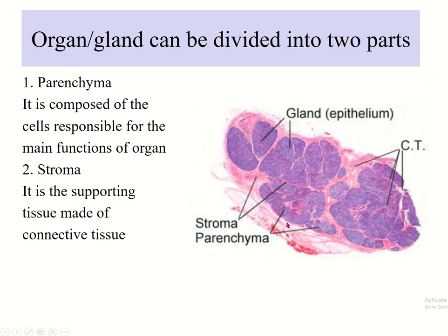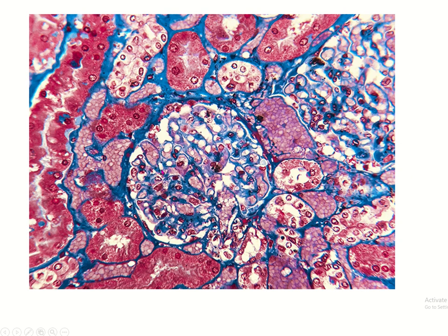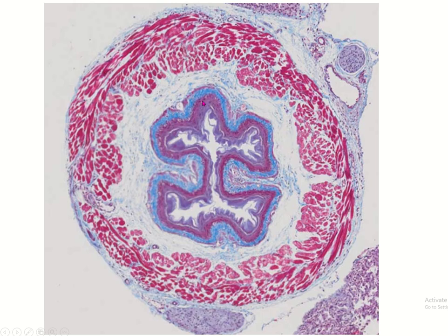Any organ of the body can be divided into two parts: parenchyma and stroma. Stroma is the supporting connective tissue, while parenchyma is formed by the cells that perform the main function of the organ. These cells are the parenchyma, and the surrounding bluish area is the connective tissue or stroma. The basic tissues are organized within the body in this way.